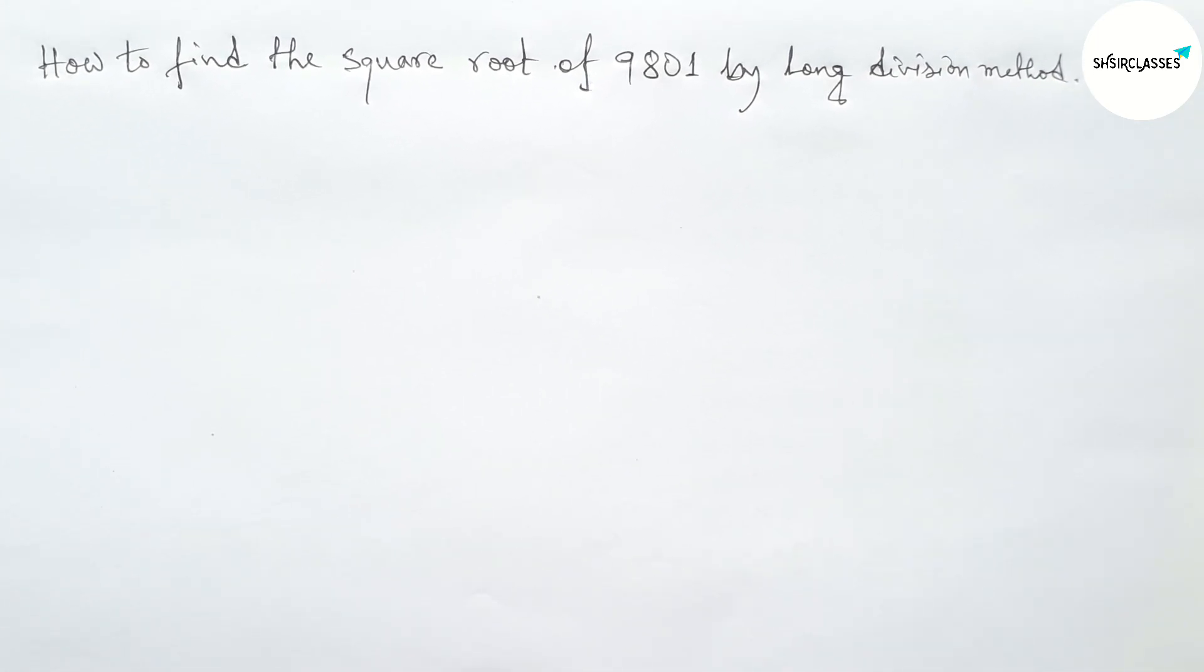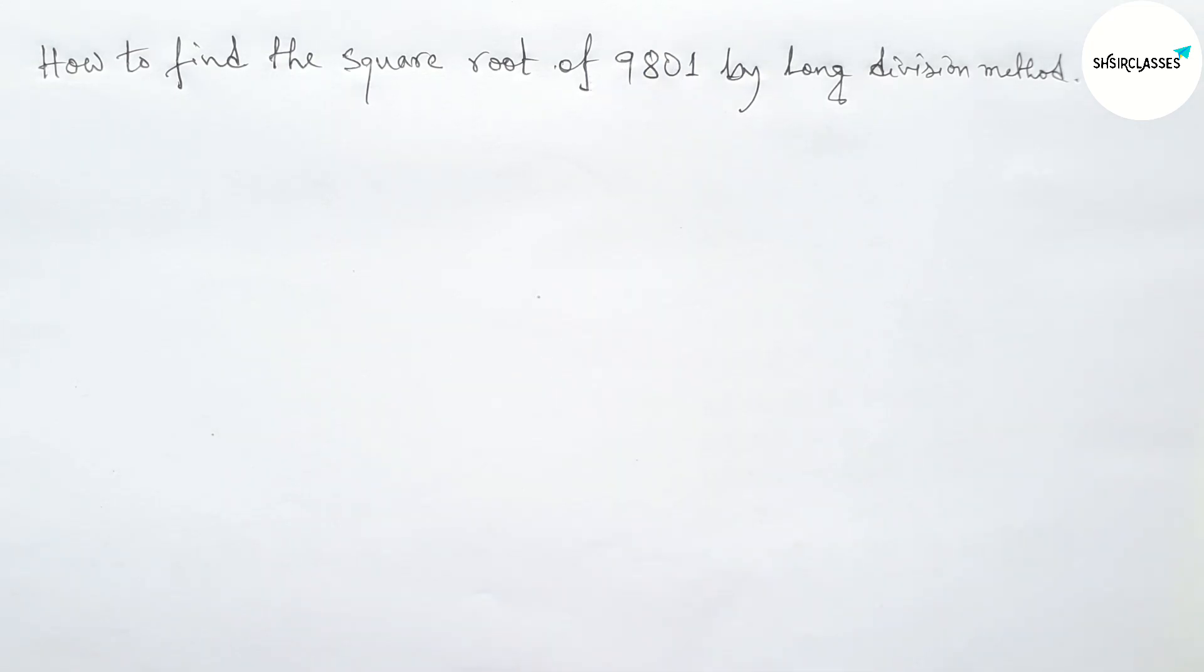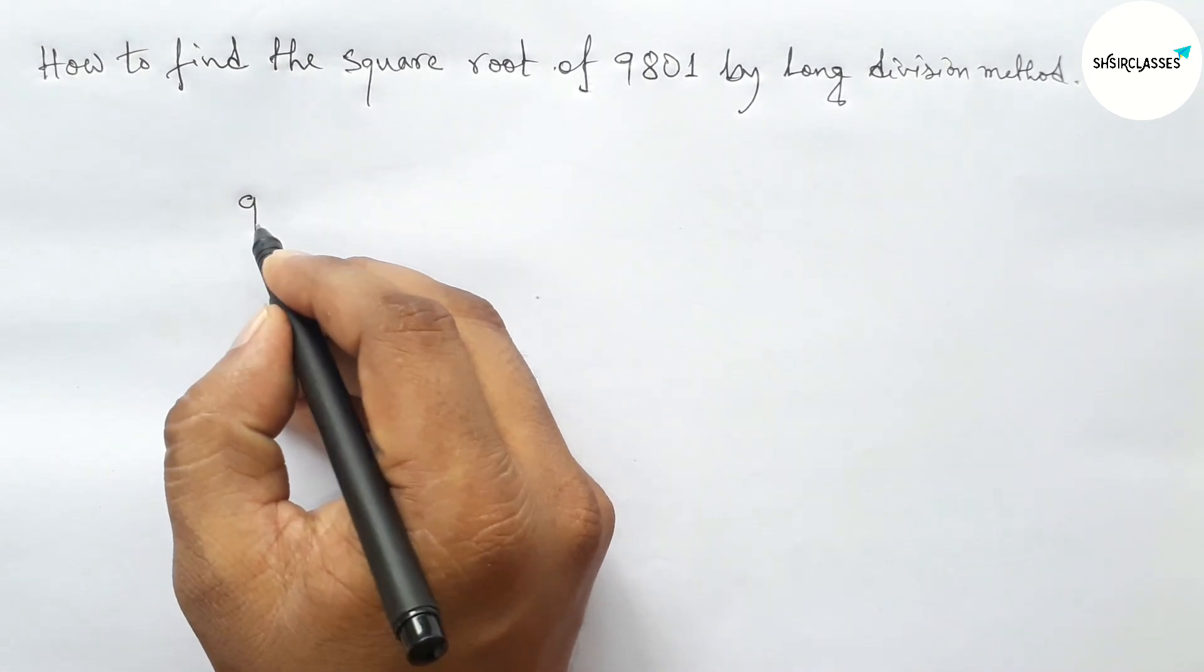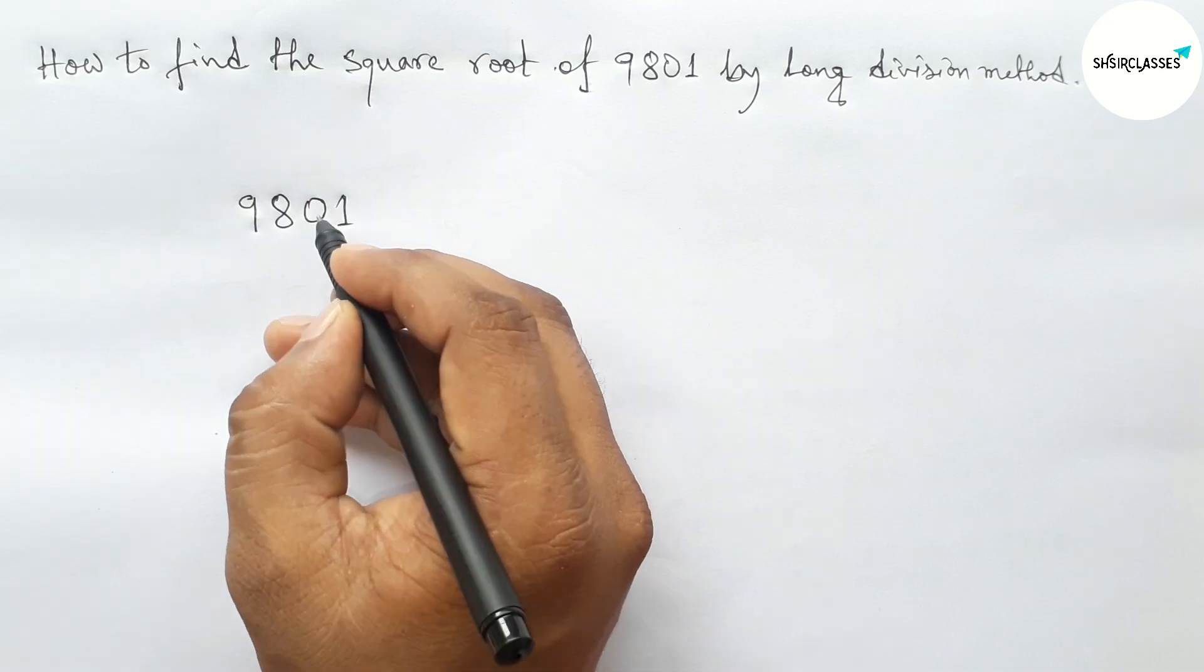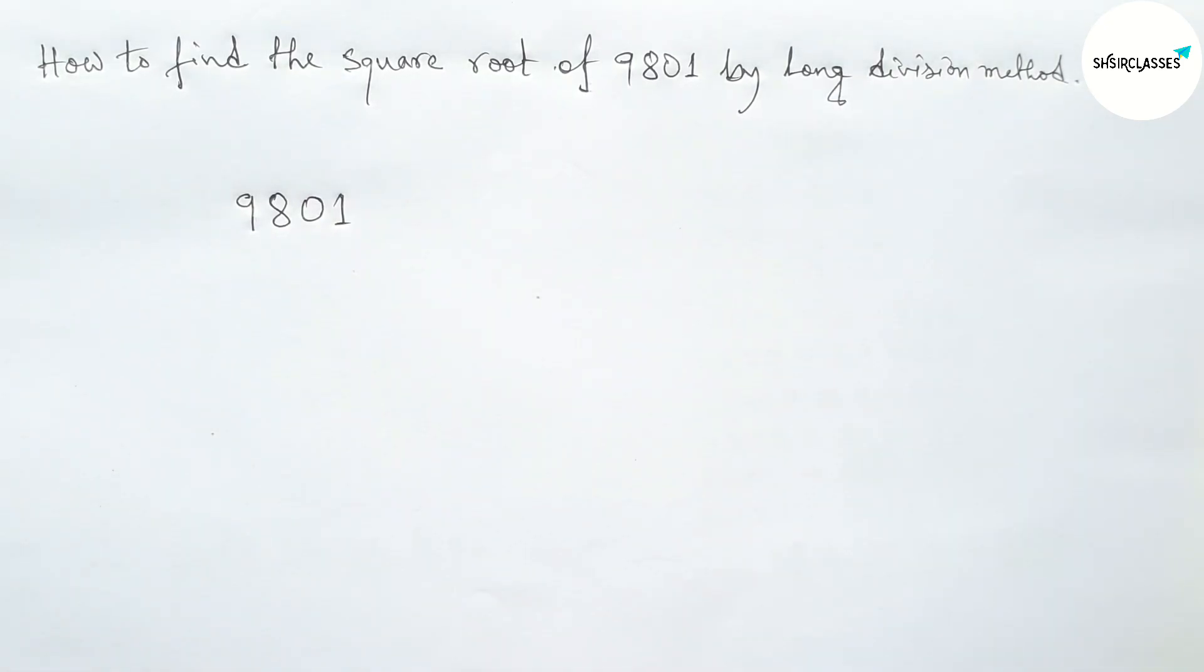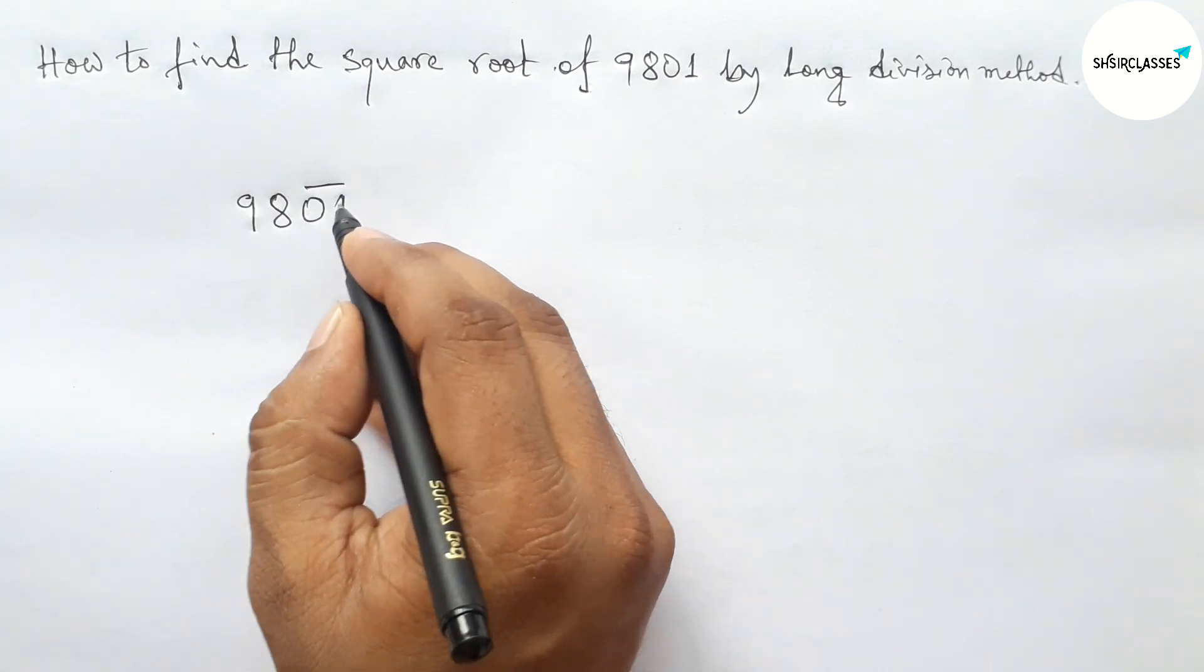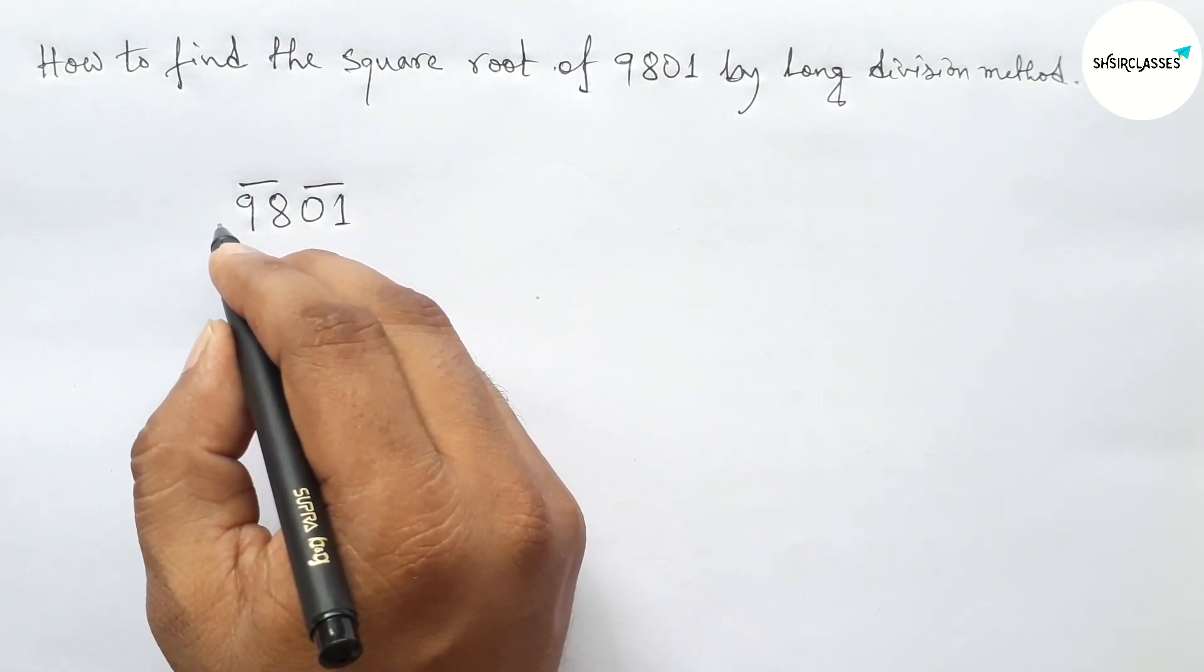First of all, let us find the square root of 9801. So now write down here 9801. Now using long division method, so first making pair of numbers from right hand side. So we got here two pair of numbers.